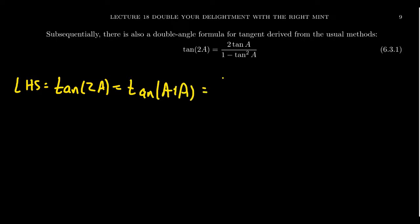You're going to get tangent of a plus tangent of a. Usually it's tangent of a plus tangent of b, but both angles are the same here. Then in the bottom you get 1 minus tangent of a tangent of a.